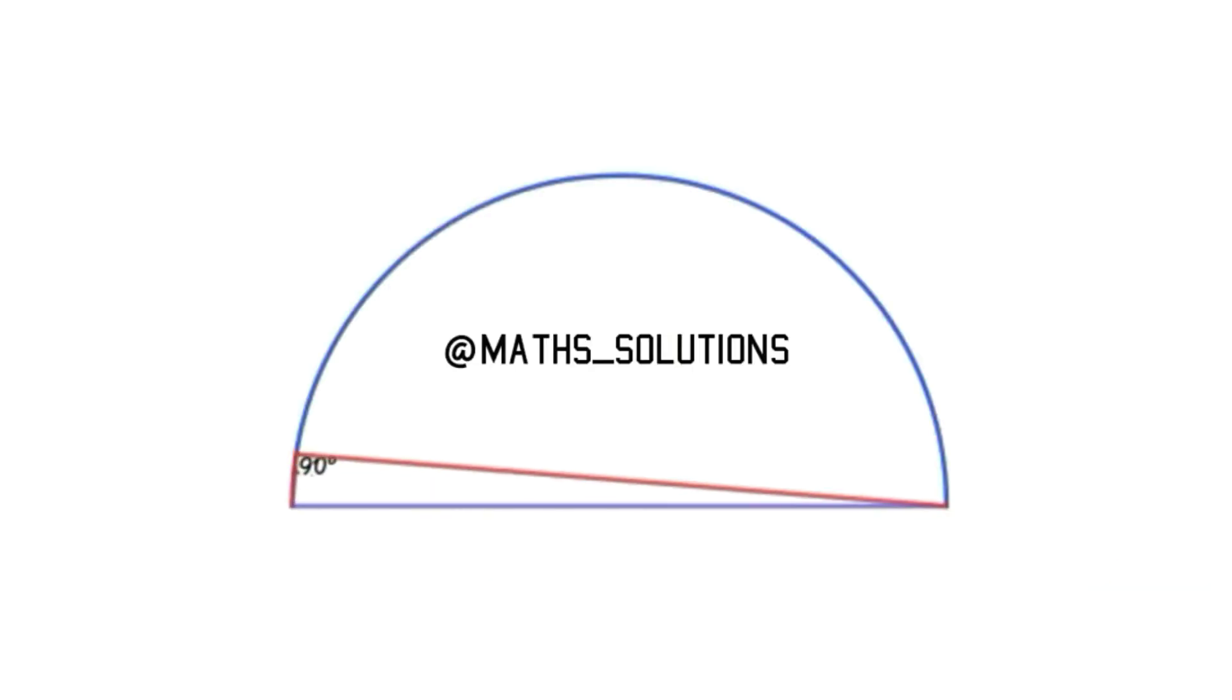Before going to the solution, let's discuss one general theorem in circles. The angle inscribed in a semicircle is always a right angle.